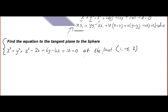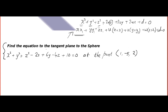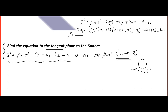Here is one question: find the equation of the tangent plane to the sphere at the given point. In such questions, first you have to confirm that this point belongs to the sphere. You plug in the point: 1 + 25 + 4 − 2 − 30 − 8 + 10 = 0, which gives 30 − 30 and −10 + 10, so 0 = 0. The point is confirmed to lie on the sphere.